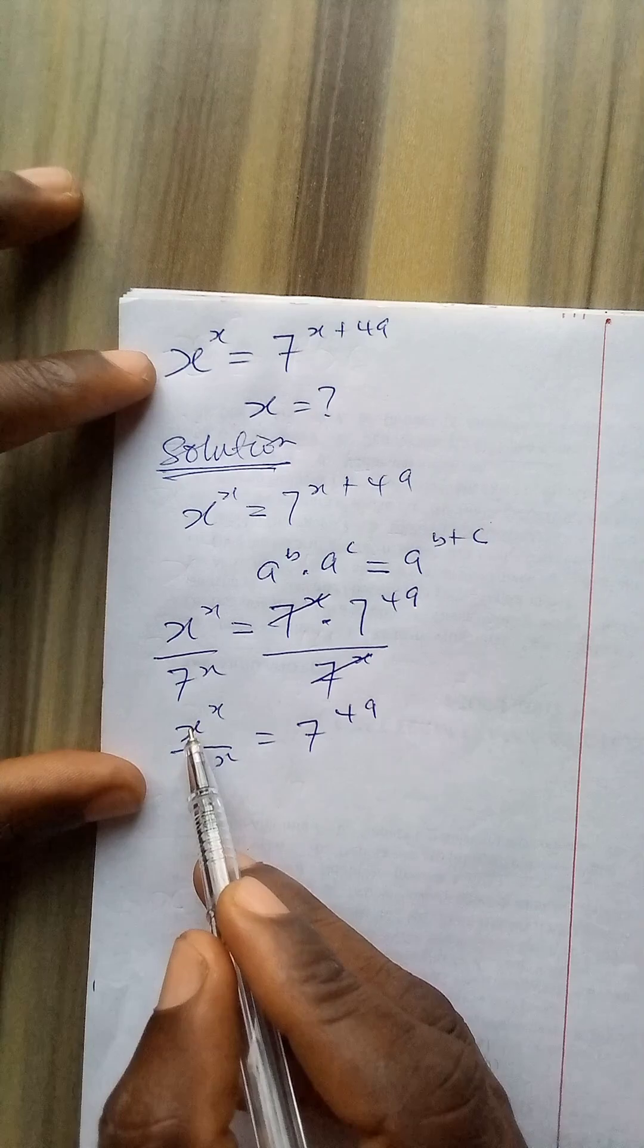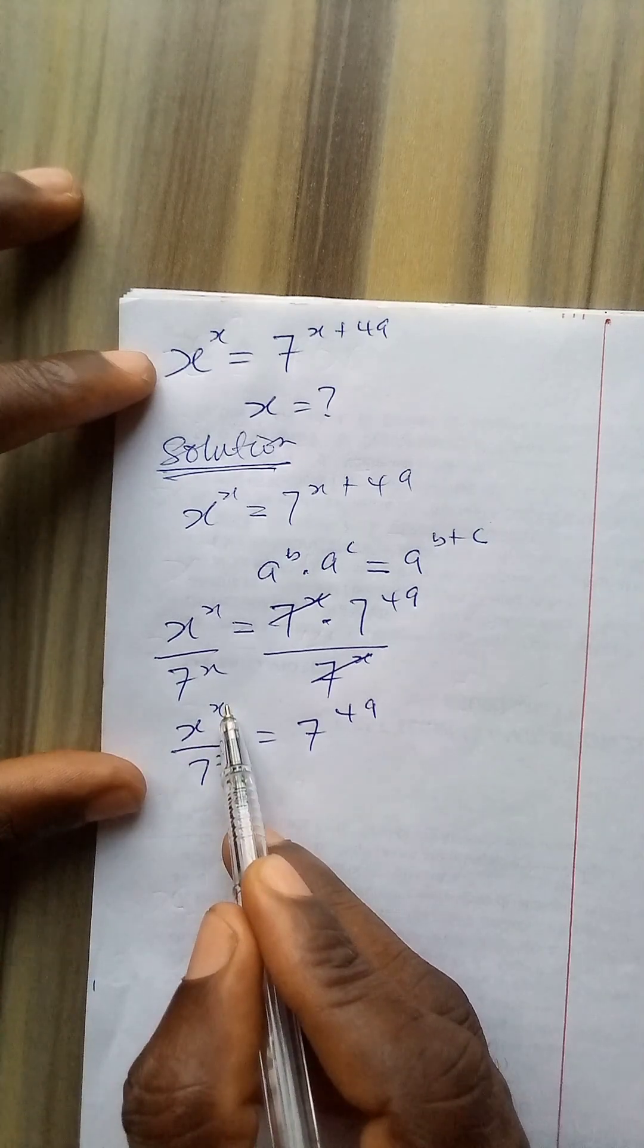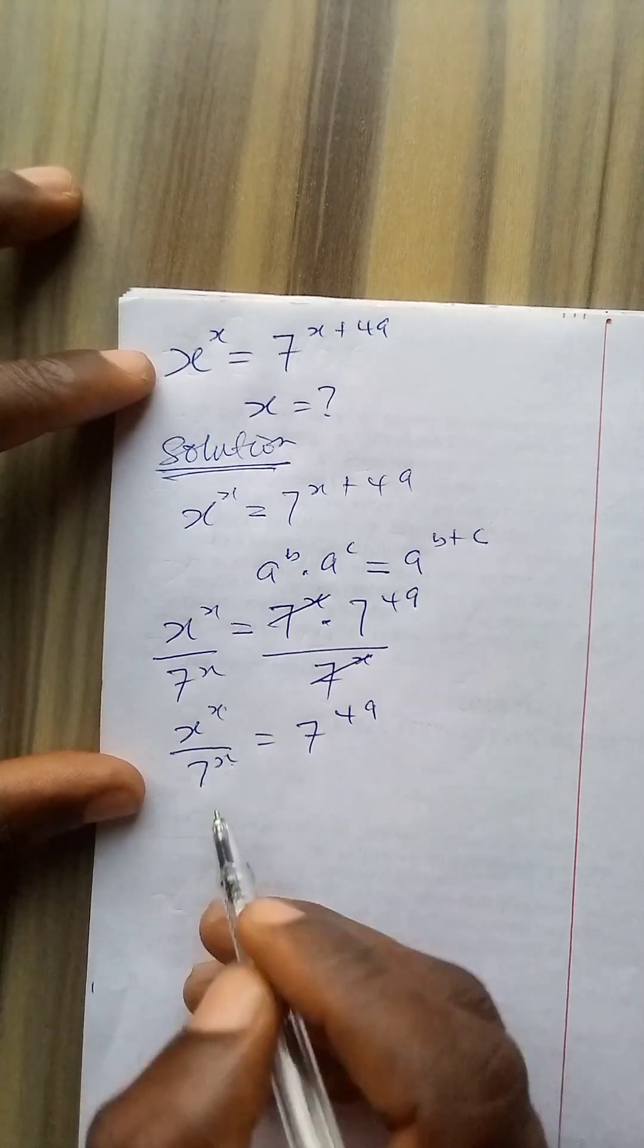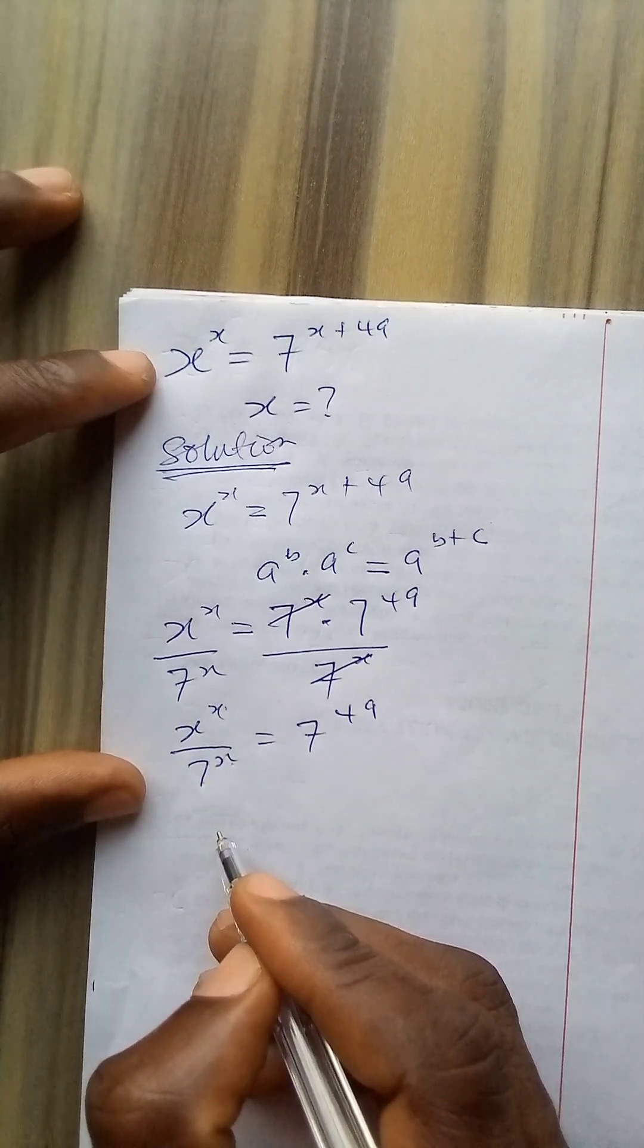Now I have a base and an exponent, a different base with the same exponent. This is divided. So I will apply the subtraction law of indices.